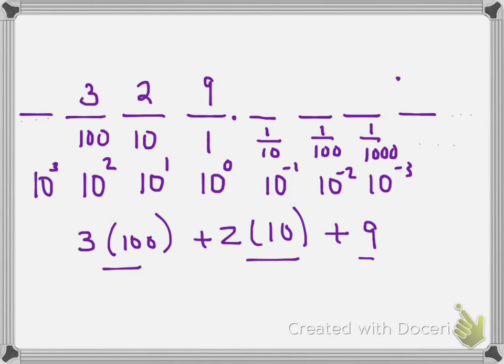Well, the same thing happens in different bases. Notice in these spaces I can only put the digits 0 through 9 — that's because I'm in base 10. So let's look at base 3.